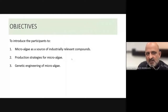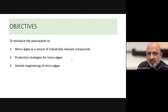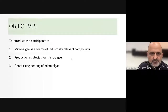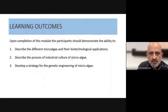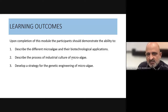The objectives of today's lecture are to introduce you to microalgae as a source of industrially relevant compounds, and in this lecture we will focus on astaxanthin. We will also look at the production strategies for microalgae and the genetic aspects of microalgae in terms of genetic engineering, which will be covered in the subsequent lecture module. You should be able to describe the different kinds of microalgae and their biotechnological applications, describe the process of industrial culture of microalgae, and develop a strategy for the genetic engineering of microalgae.